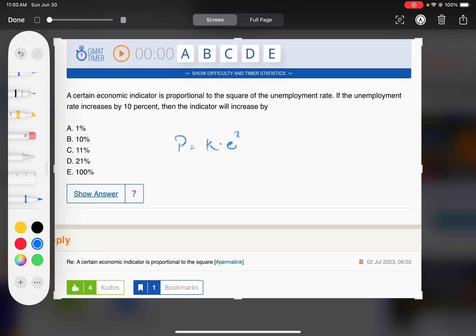If it's directly proportional to the square of the unemployment rate, that means something equals k times something. Direct proportionality: something equals k times something, k being that constant rate of proportion. If it's inversely proportional, it's 1 over k. But this is directly proportional.